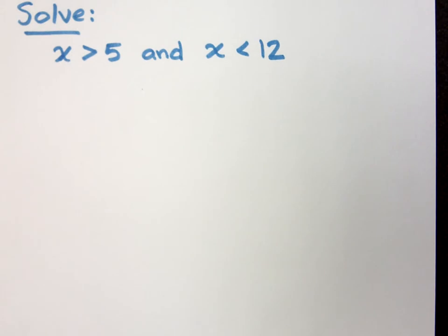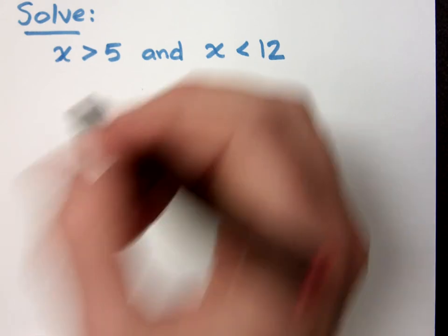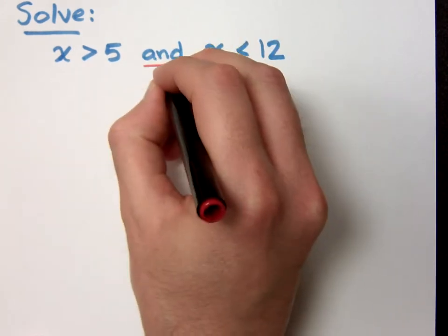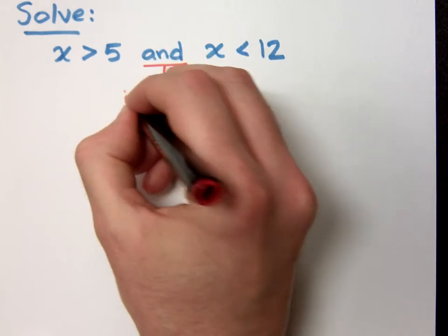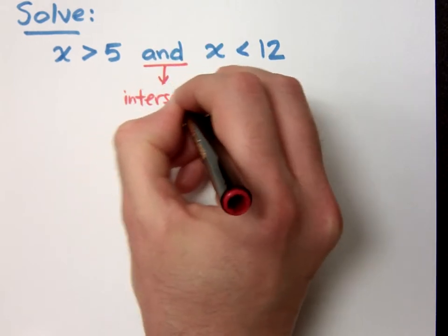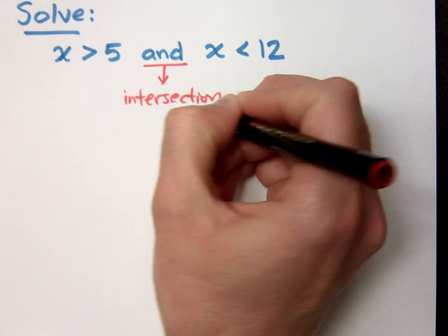Let's look at some more compound inequalities. Here we have x is greater than 5 and x is less than 12. Remember that the word and corresponds to intersection.